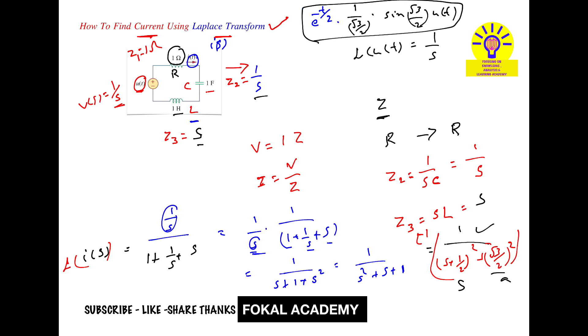Observe carefully once again. For S squared plus A squared, we have 1 by A times sine AT. But here S is shifted by 1/2, so that will be e to the power of minus T by 2. First I apply the shifting property, then the standard formula 1 by S squared plus A squared.